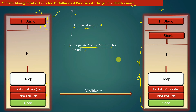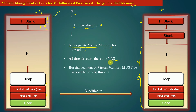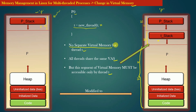A newly created thread has equal access to the virtual memory of a process. Therefore all threads share the same virtual address space of a process. But this segment of virtual memory must be accessible only by thread T, because every thread has its own stack memory. The operating system will allocate this portion of virtual memory exclusively for thread T, because a thread needs its own stack memory in order to execute.